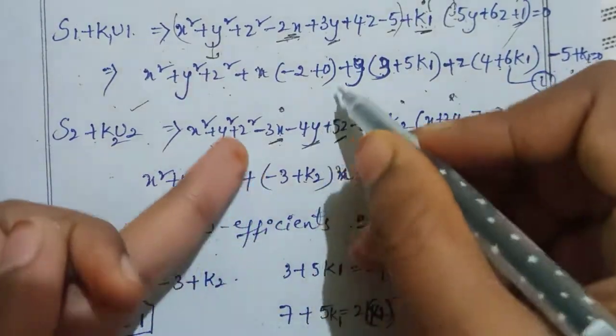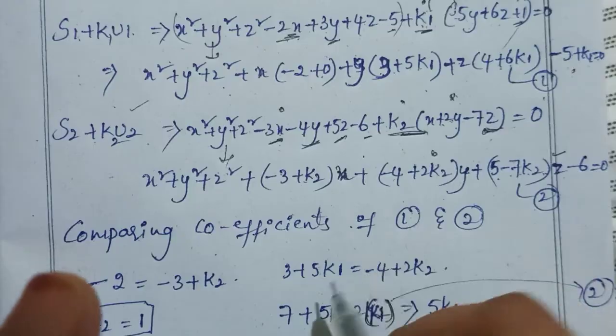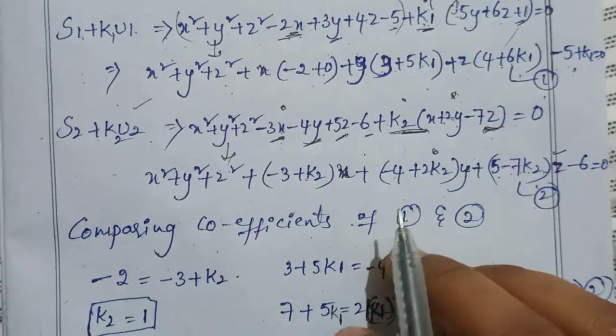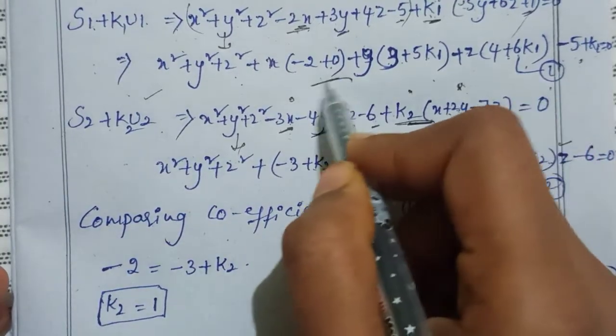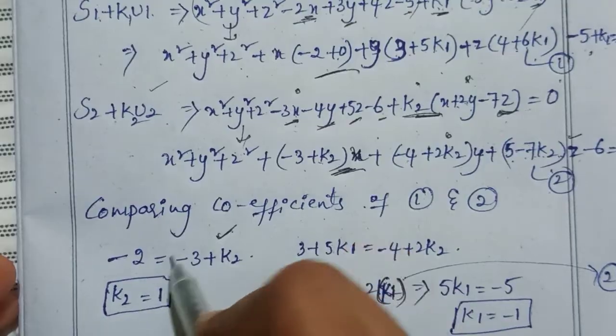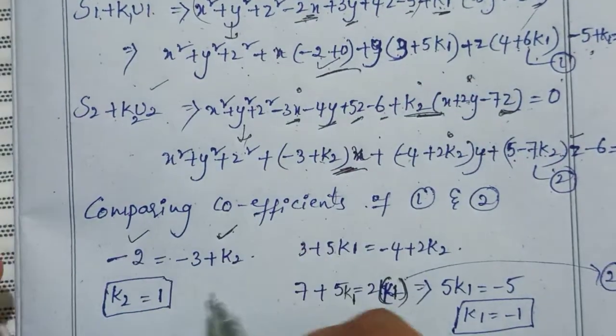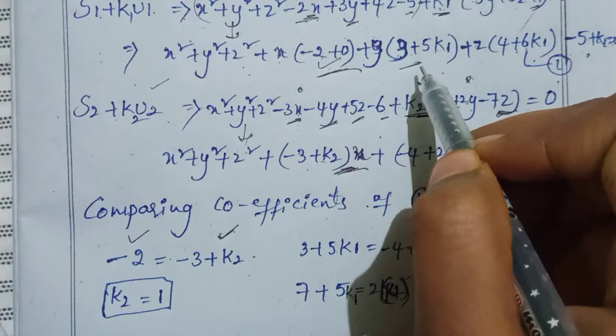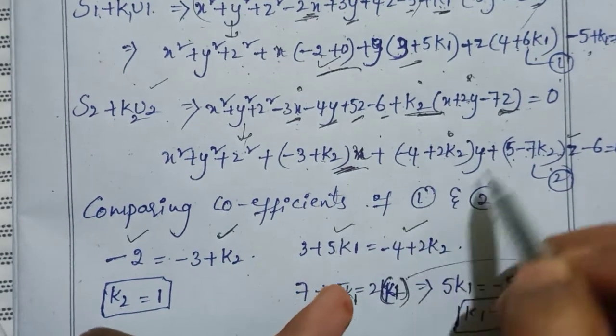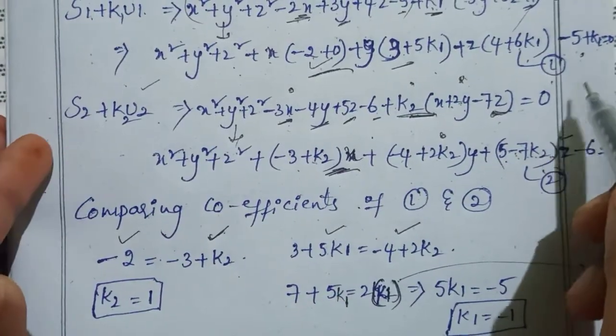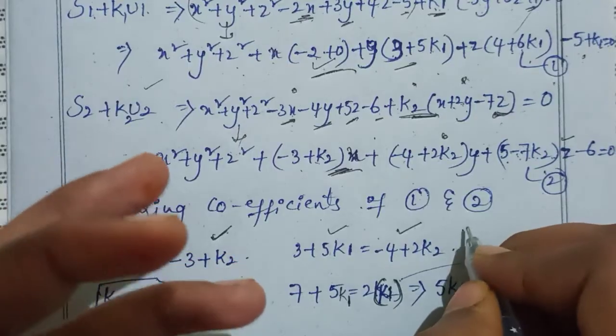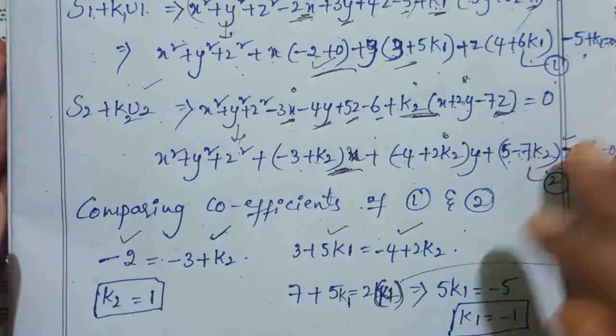Since these represent the same sphere, we compare coefficients of equations 1 and 2. For x coefficient: -3+K2=-2. For y coefficient: 3+5K1=-4+2K2. Similarly for z and constants.